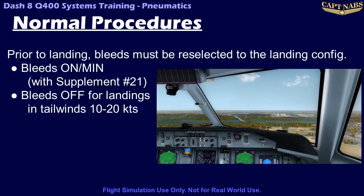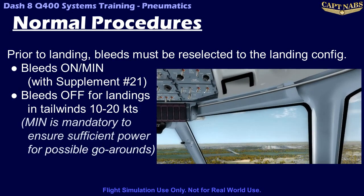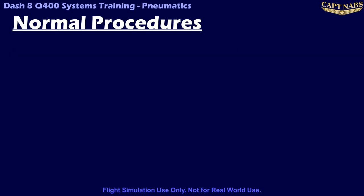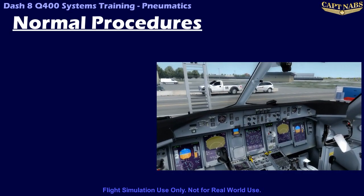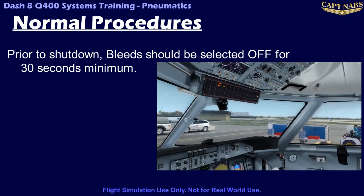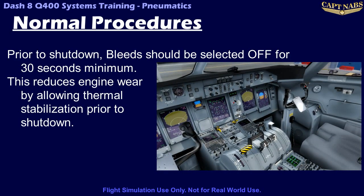Even when the bleeds are on for landing, they must be set to min as for takeoff. This is to ensure maximum power is available should a go-around be required. Finally, the bleeds should be selected off prior to shutdown. The engines should run with the bleeds off for at least 30 seconds prior to shutdown, as this aids with thermal stabilization in the engine and helps prevent premature engine wear.